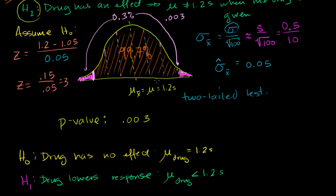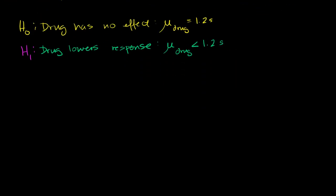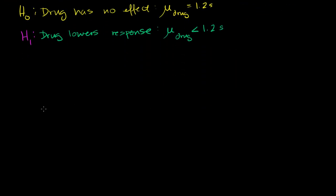And using that, we saw that the result, the sample mean that we got, the 1.05 seconds, is three standard deviations below the mean. Three standard deviations below the mean. So if we look at it, let me just redraw it with our new hypothesis test. So this is the sampling distribution.